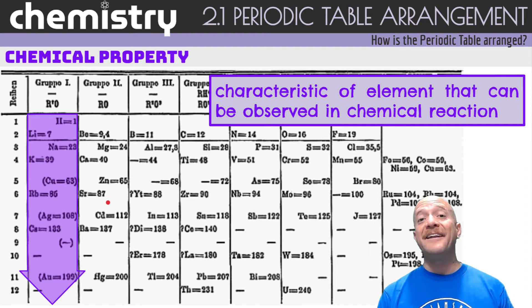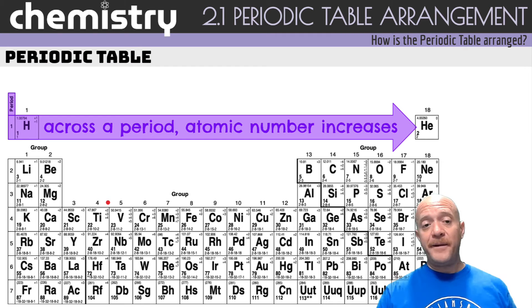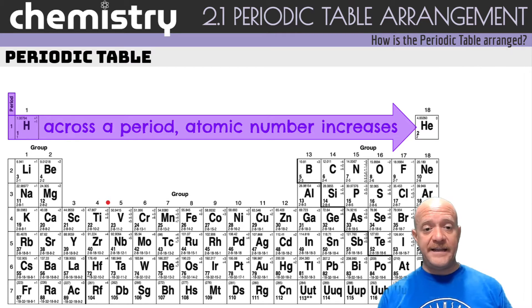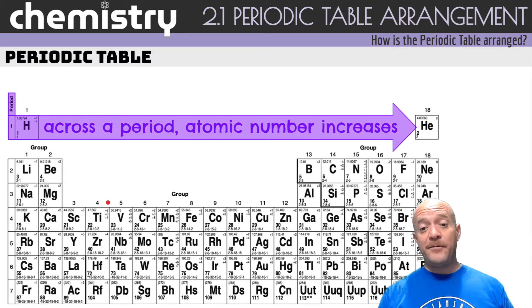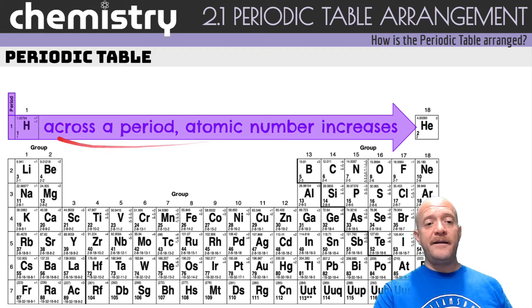Mendeleev's system was so successful that he was able to identify the properties of elements that hadn't even been discovered yet. The modern periodic table — which is the one you will see in your reference table — is built on this foundation.